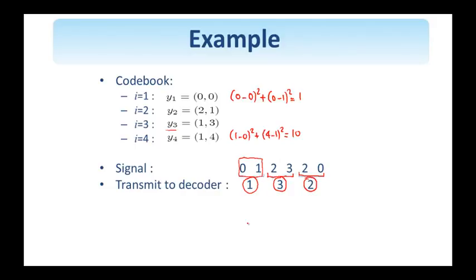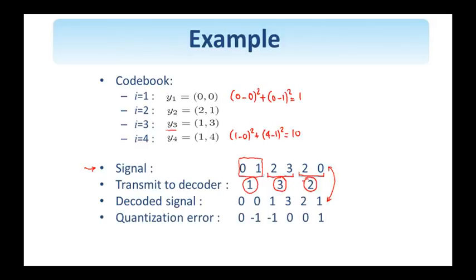So, now, at decoding, we are going to reconstruct the input signal by the vectors corresponding to indices 1, 3, and 2, or in other words, this is the decoded signal. And if I find the difference between the original and decoded, this is the quantization error. So, this is the simple operation of a vector quantizer, assuming, of course, that the codebook has been designed appropriately, and this is now the topic we'll look into, how to efficiently design an appropriate codebook.